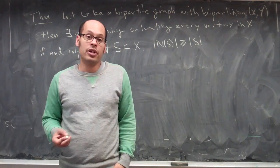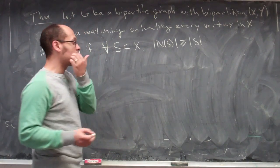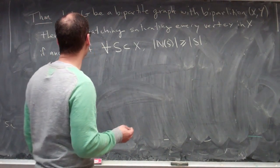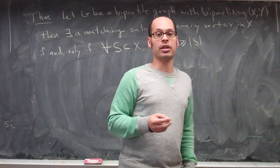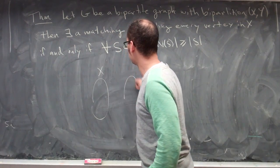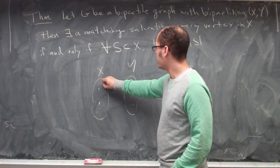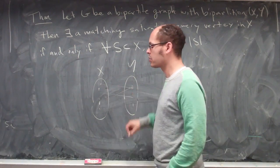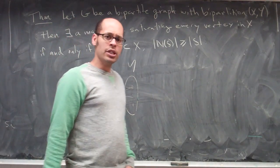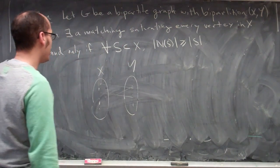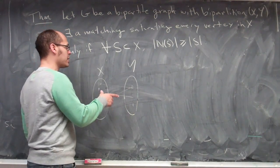Before I explain the proof of that theorem, let me just recall what we did last time. We showed that if you have a bipartite graph with bipartition x, y — so the graph is broken up into two pieces, one called x and the other y — with vertices on each side, and the edges are only allowed to cross between these two sets, with no internal edges within x or y. In this situation, we'd like to find a matching which saturates every vertex in x.